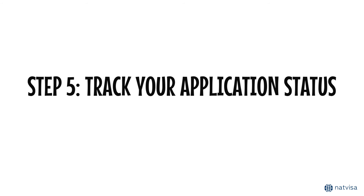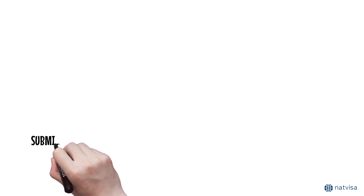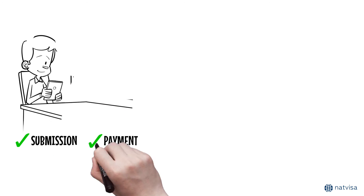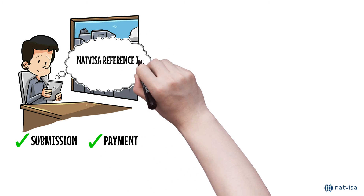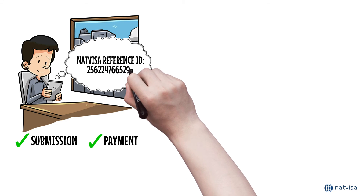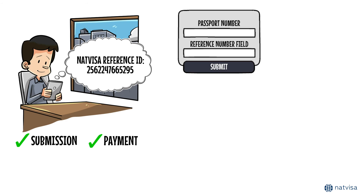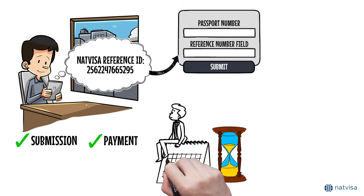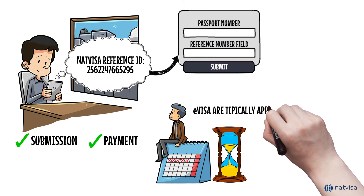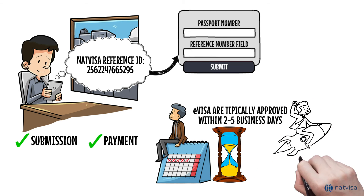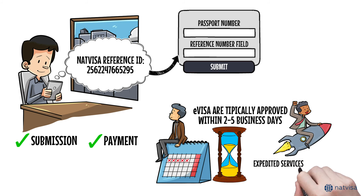Step 5: Track your application status. Following the submission of your application and payment, you'll be provided with a Natvisa reference ID. Utilize this ID to monitor your application status on the website. While processing times may differ, the majority of e-visas are typically approved within a span of 2 to 5 business days. Expedited services may be available.